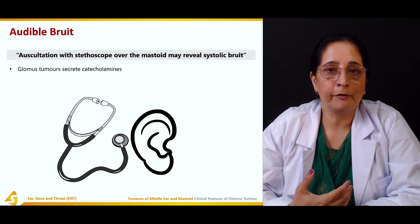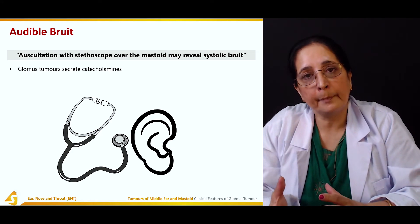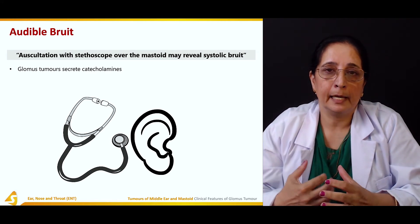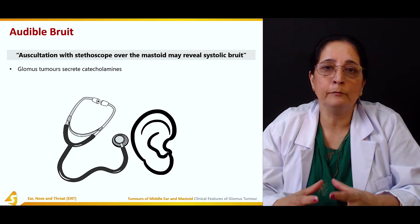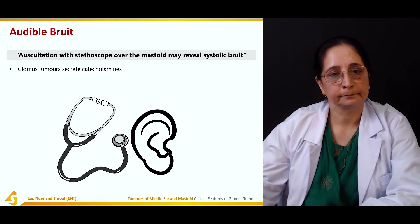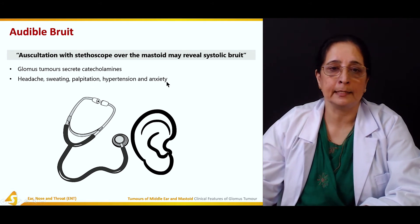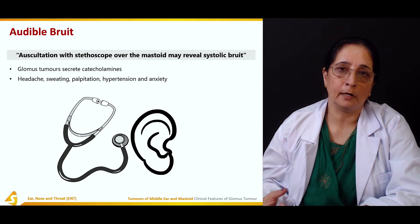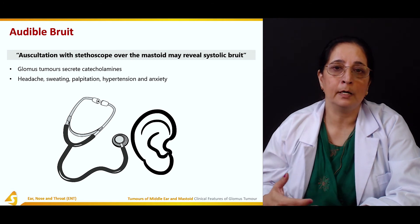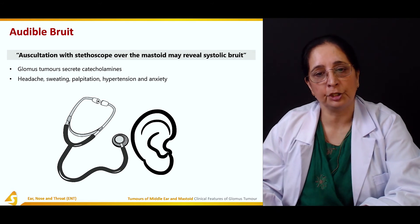Glomus tumors secrete catecholamines — epinephrine and norepinephrine. These neurotransmitters cause increased stimulation of the vascular system and can cause bruit. Due to production of catecholamines, patients may experience headache, sweating, palpitations, hypertension, and anxiety.